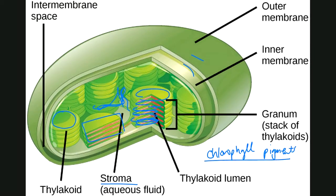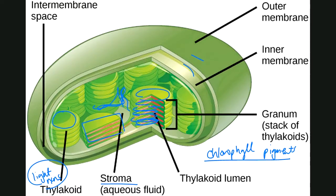The chlorophyll pigments are embedded in the thylakoid membranes. That means the thylakoid membrane is where the light reactions are happening — this is where sunlight is being harnessed. The pigments are necessary because they absorb light energy. The Calvin cycle, sometimes referred to as the dark reactions, occurs in the stroma because it does not directly use sunlight or the chlorophyll pigments.